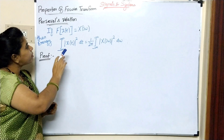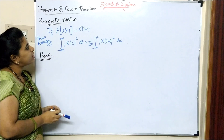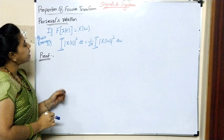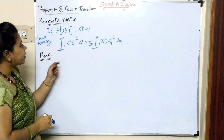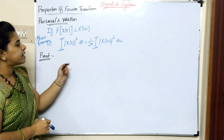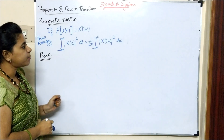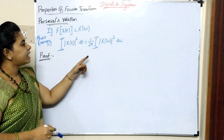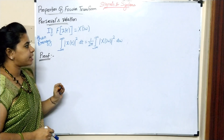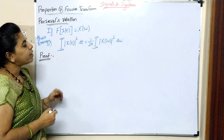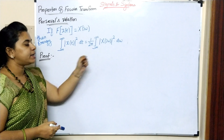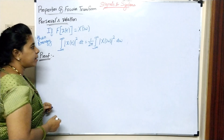If Fourier transform of x of T equals x of j omega, then energy equals integral of modulus of x of T whole square into dt, which equals 1 divided by 2pi, integral minus infinity to infinity, modulus of x of j omega whole square into d omega.